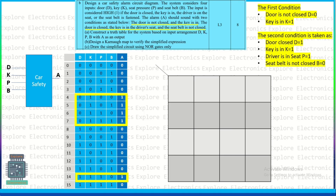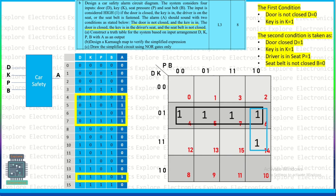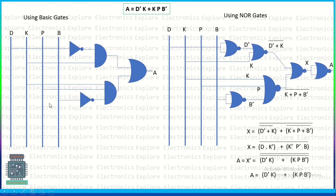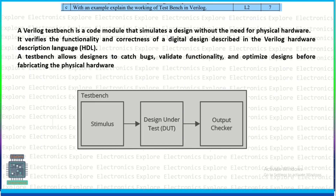Taking these values into the K-map leads to two groups, giving the expression D̄K + KPB̄. The next step is implementing it using only NOR gates — a basic gate implementation is shown for reference. The NOR gate implementation takes six NOR gates. An intermediate value X is used in the simplification to arrive at the correct output. This completes the car safety alarm circuit question.